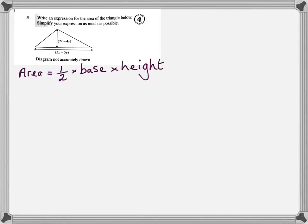Okay, I've started off just by writing down the formula for the area of a triangle, half base times height, and now I'll put in the information that's been given in the question.